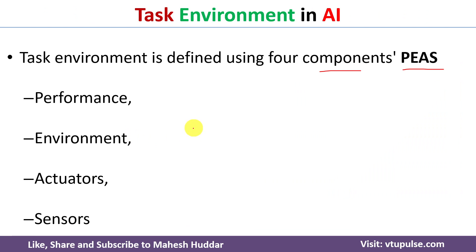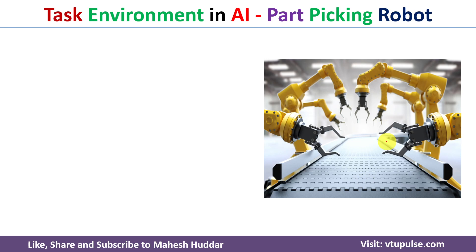We will consider a part picking robot to understand these four components of task environment. The robot setup has a belt on which different parts move from one end to the other. Along the belt, there are robots with arms and sensors attached. These robots pick each part and place it into the correct bin.